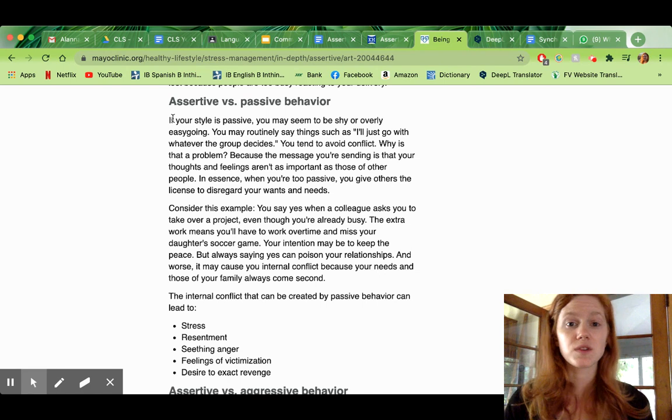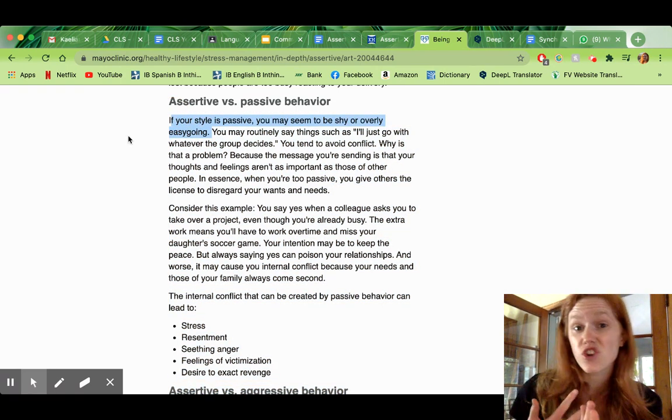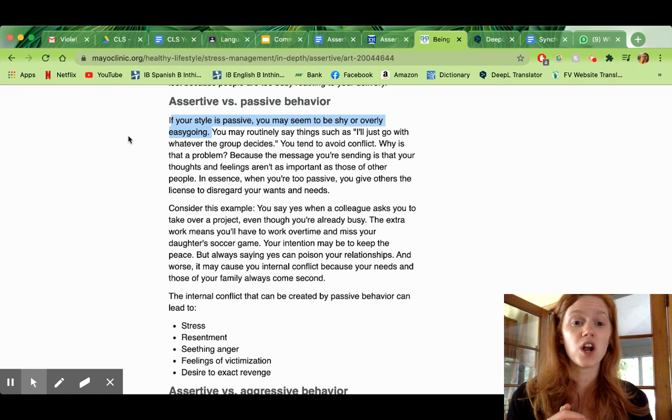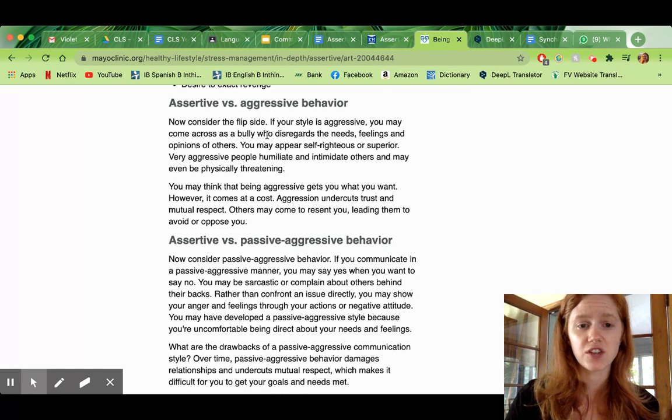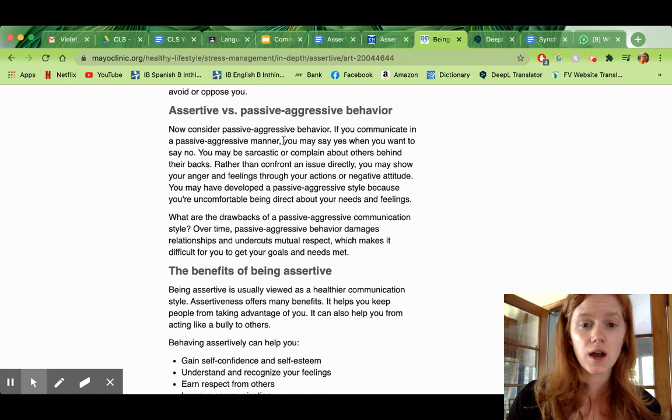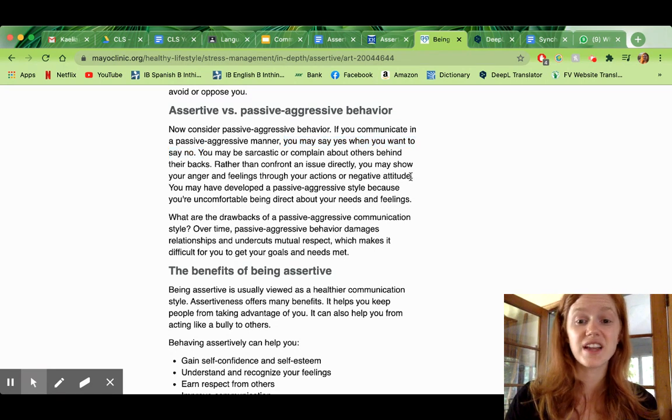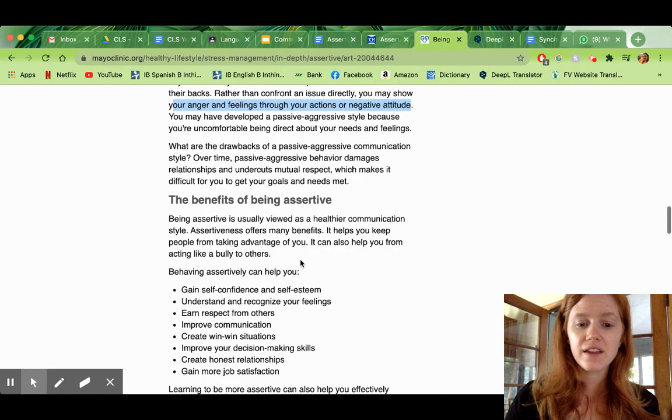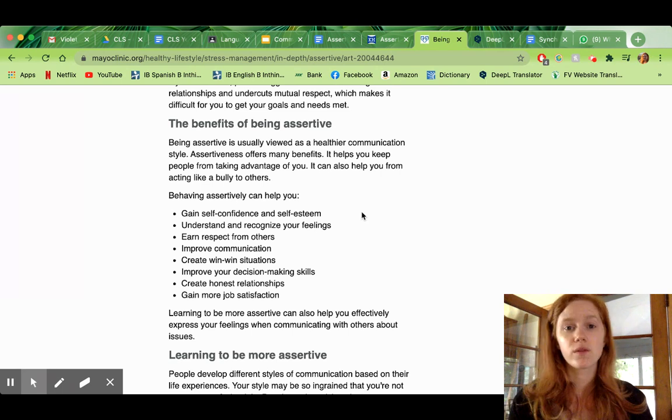So, we talked about some problems with each communication style. Right? We know that if your style is passive, maybe people will think that you're okay with things that you're not okay with. Right? Maybe you will seem to be shy or overly easy going. You don't have opinions. If you have an aggressive communication style, maybe people think you're a bully who doesn't care about the needs and feelings and opinions of other people. If you have a passive aggressive style, you may say yes when you want to say no. And then you may show your anger about that through your actions later in a way that's confusing to other people. But if you're assertive, you know, then you can really express what you want to express while still showing respect for others.